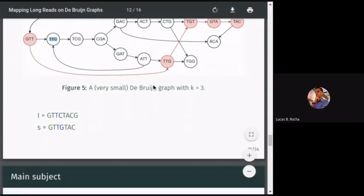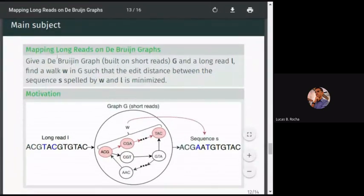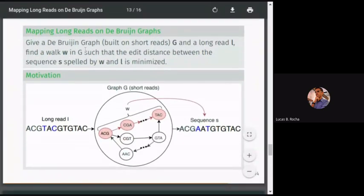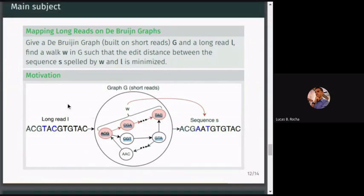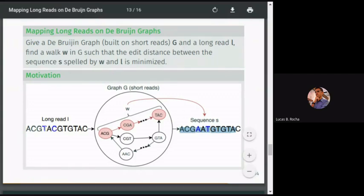This is a formalization of our problem, mapping long reads on de Bruijn graphs. Given a de Bruijn graph G and a long read L, find a walk w in G such that when I concatenate all k-mers we have a sequence S and the edit distance between L and S is minimized. This is our problem.